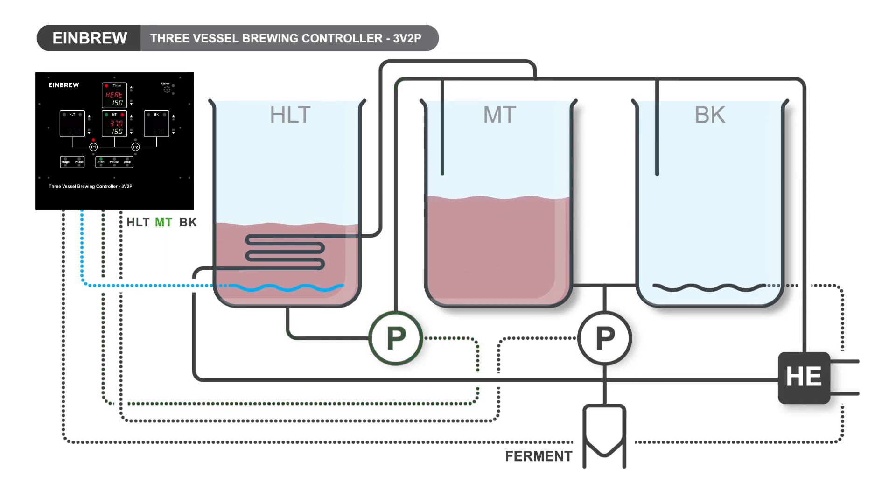Control automatically moves to the mash tun. The next stage is the first mash step. It will perform this automatically and proceed to any subsequent steps, eventually coming to the mash-out temperature, when it alarms for you to sparge and boil. Control automatically moves to the boil kettle.